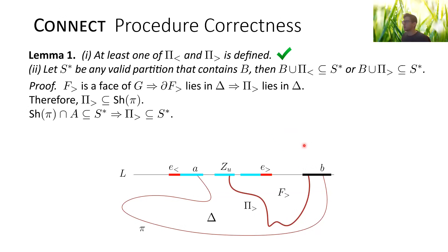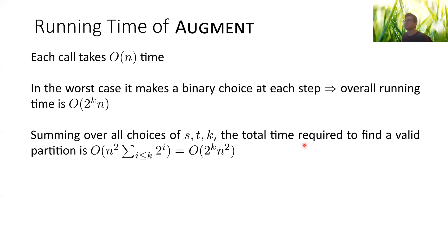As for the running time: each call to augment takes linear time, including the connect sub-procedure. Since the procedure branches on at most two options at each step and each branch increases the partial solution size, the depth of each branch is at most k. Therefore the recursion tree has 2^k nodes, giving augment a running time of 2^k * n. Since we iterate over all O(n) pairs (s, t), the overall running time is 2^k * n^2.